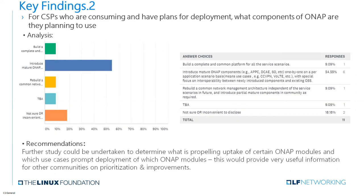Based on key finding one, for those who are consuming and have plans for ONAP deployment, what components of ONAP are they planning to use? From CSP responses, around 55% plan to introduce mature ONAP components one by one on a per-application scenario basis, with specific focus on interoperability between newly introduced components and existing OSS, which accounts for the majority. EUAG recommends that further study could be undertaken to determine the uptake of certain ONAP modules and which use cases prompt deployment of which ONAP modules. This would provide very useful information for other communities on prioritization and improvements.